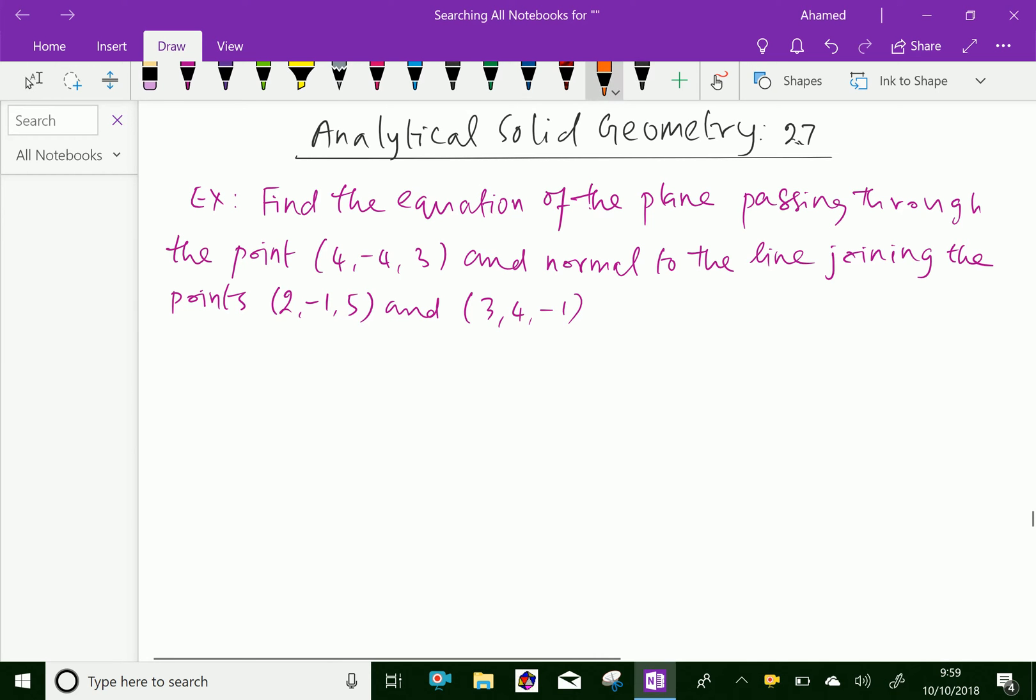Look at this example. Find the equation of the plane passing through the point (4, -4, 3) and normal to the line joining the points (2, -1, 5) and (3, 4, -1).